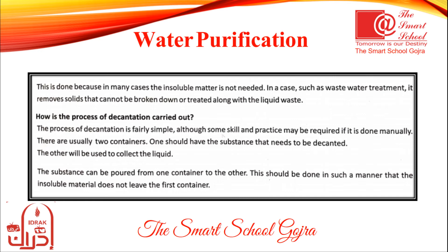How is the process of decantation carried out? The process of decantation is fairly simple. As shown in figure 8.2, we take two beakers. From one beaker containing dirt particles, we pour the water into the second beaker. The liquid portion can be poured from one container to another in such a manner that the insoluble material does not leave the first container.